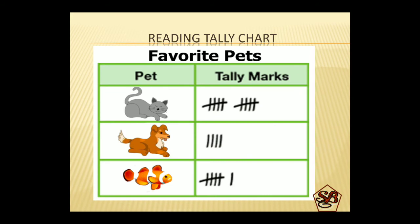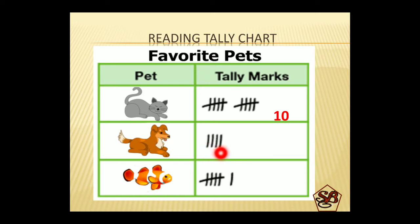Here is another tally chart and we have to find the number of favorite pets. Cat: 5 plus 5 will give us 10. And here 1, 2, 3, and 4 vertical lines which represents 4. Fish: 5 plus 1 is 6.